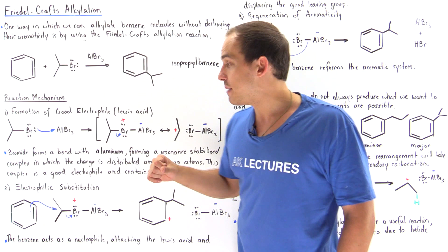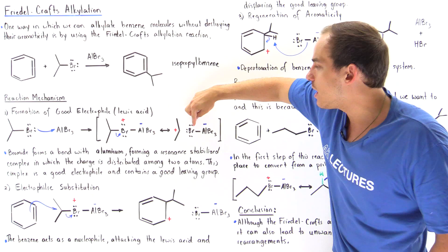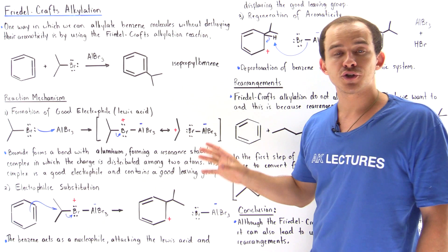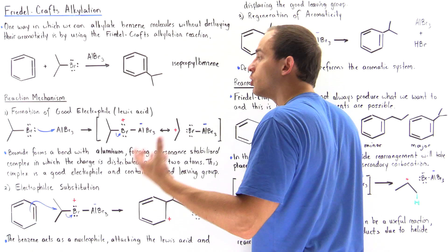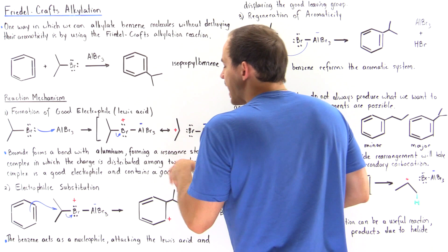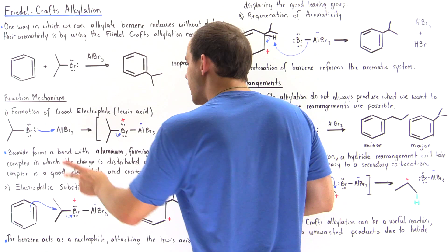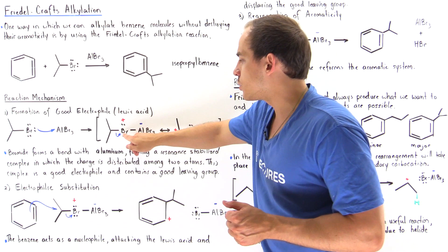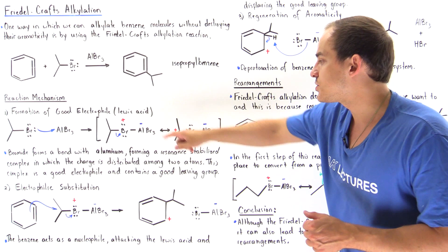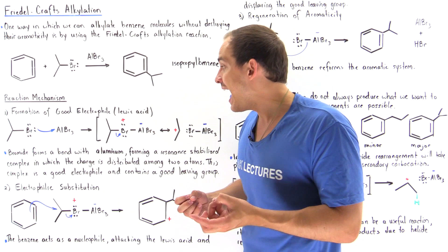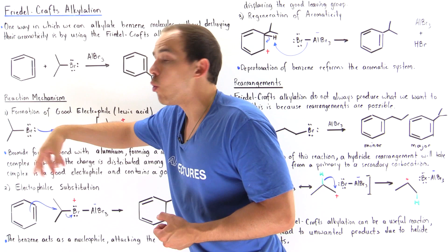There is resonance stabilization: the bond can actually break and the pair of electrons can end up on the bromide, so the positive charge shifts from the bromide to the carbon — forming a carbocation intermediate. In step one, we have the formation of a resonance-stabilized structure where bromide forms a bond with aluminum. The positive charge is distributed between two atoms — it can appear on the bromide or on the carbon. This complex is now a very good Lewis acid, a very good electrophile, with a very good leaving group.